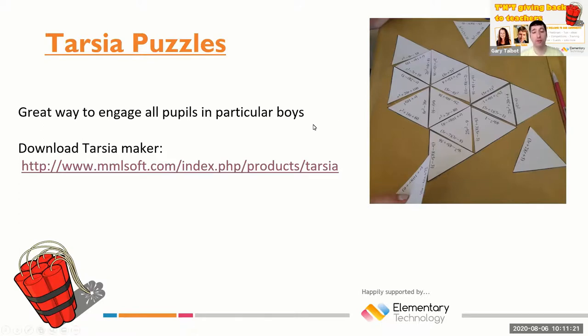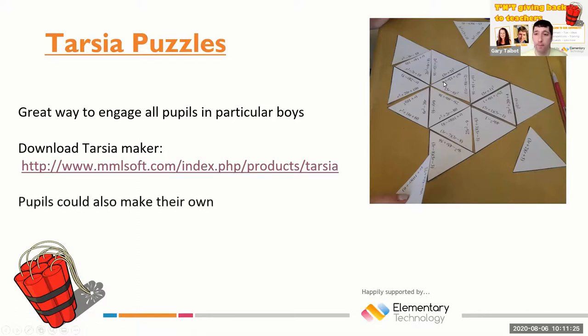You could also get pupils to make their own Tarsier puzzles. You could give them blank triangles and get them to make their own, which is a higher order skill. So that's just another use of it.